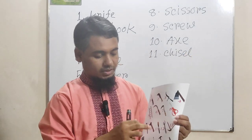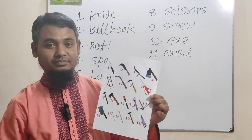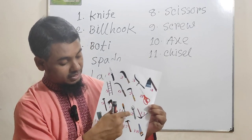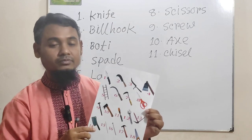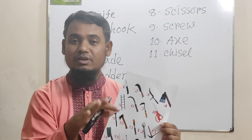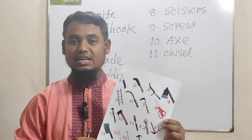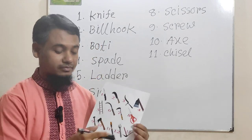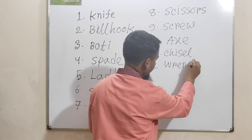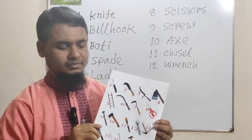Picture number twelve is wrench. Wrench is a very familiar tool in both city and rural areas, and it is very common for all classes of people. Whenever we tighten a nut or bolt, or loosen a nut or bolt, we have to use this tool. Picture number twelve is wrench.